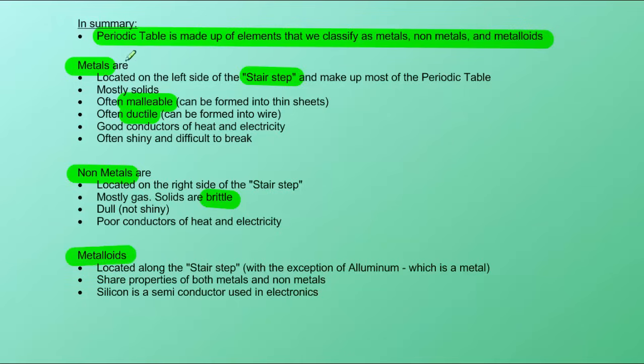Metalloids are in between metals and nonmetals. They are located along the stair step on the periodic table, with the exception of aluminum. Aluminum is the one that doesn't follow that rule. It's a metal, but it is along the stair step. Metalloids share properties of both metals and nonmetals. And we talked about silicon as an example. It's a semiconductor, and that property allows us to use it in electronics.